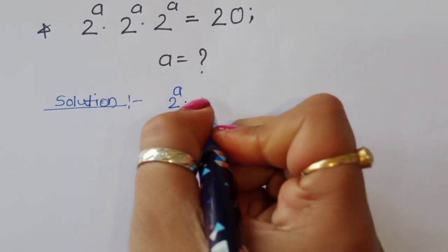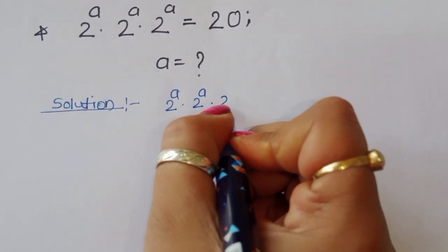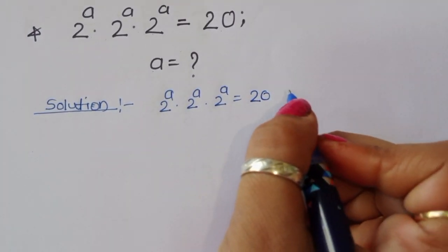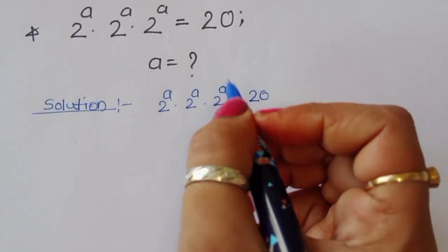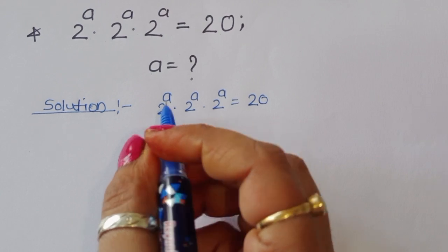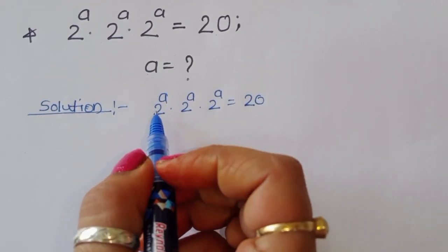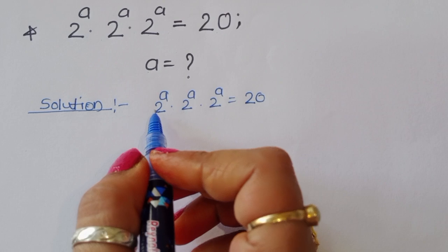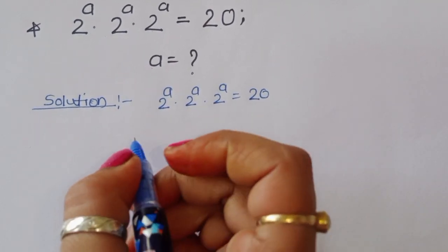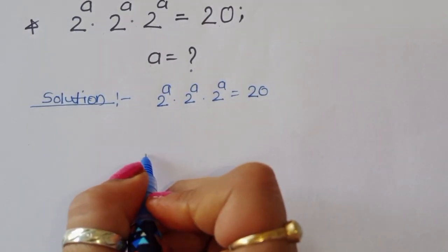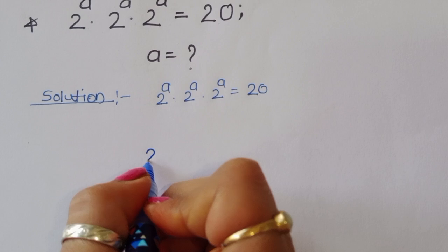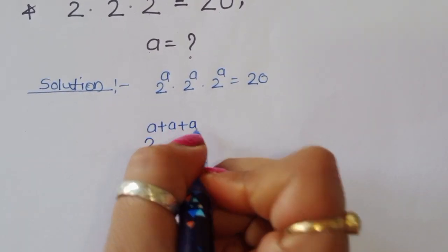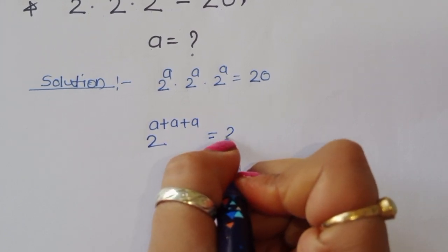The question is 2 power a times 2 power a times 2 power a is equal to 20. We know the formula: a power m times a power m times a power m is equal to a power (m plus m plus m). Using that formula, we get 2 power (a plus a plus a) is equal to 20.